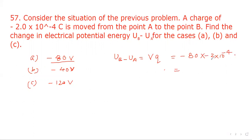This minus will make it plus 160 into 10 to the power minus 4. For second one UB minus UA, this time potential is minus 40 into charge is minus 2 into 10 to the power minus 4. This will be equal to plus 80 into 10 to the power minus 4 joule.